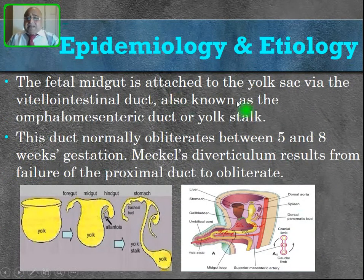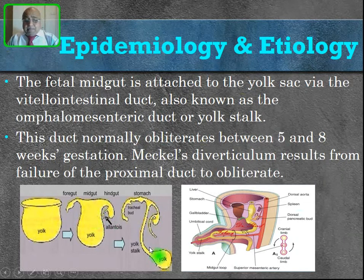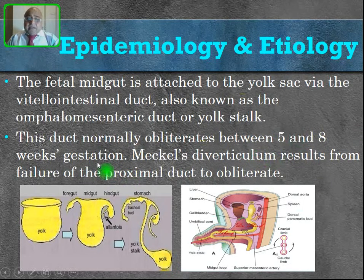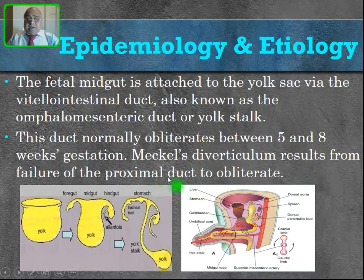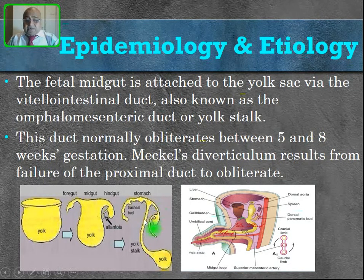The fetal midgut is attached to the yolk sac via the vitelointestinal duct, also known as the omphalomesenteric duct or yolk stalk. This duct starts with a wide mouth but soon becomes very narrow and finally obliterates around 5 to 8 weeks of intrauterine gestation. Meckel's diverticulum results from failure of the proximal part of this vitelointestinal duct to obliterate — if this part doesn't obliterate, the Meckel's diverticulum will result.